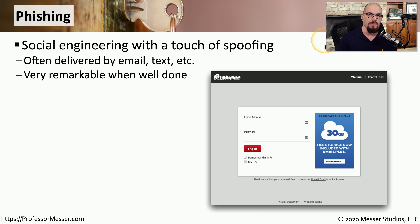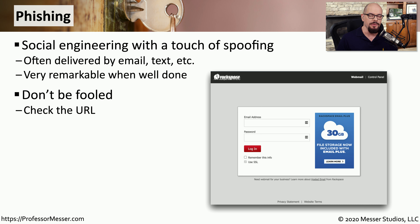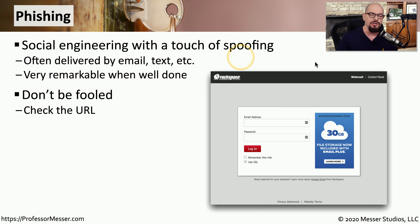The email is going to pretend to be from my email provider or my internet service provider. But when I click the link, it's going to bring up a page that looks almost exactly like the one I would see at my actual internet service provider's website. The one thing that the attacker can't do is make the address bar show the actual URL of your ISP. So very often, looking in your browser, you can see this really did not come from the Rackspace website because the URL will not show rackspace.com at the top.